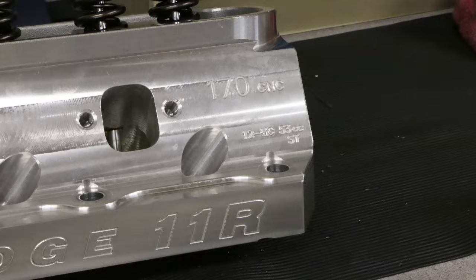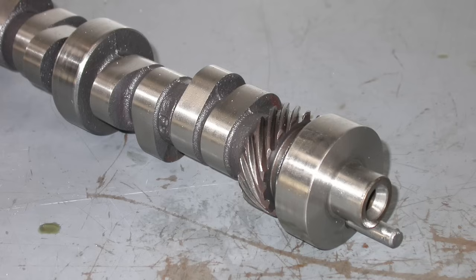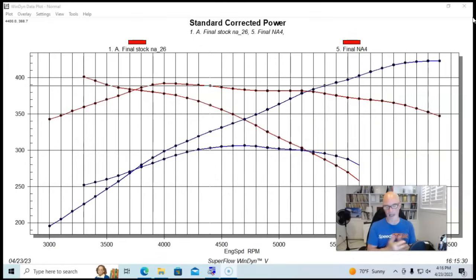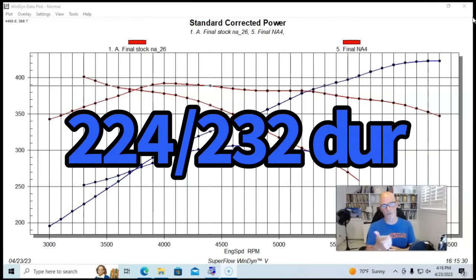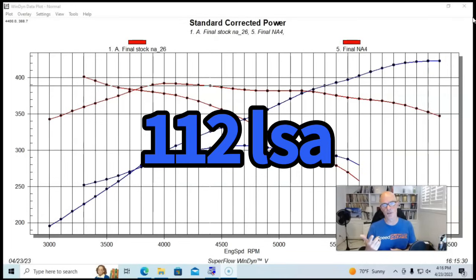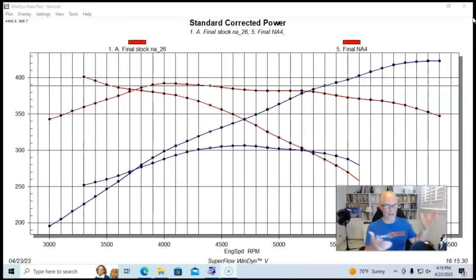It had the Trick Flow Stage 2 camshaft, which is almost identical specs compared to the Extreme Energy 274 cam—you know, mid-500s lift, 550-560 kind of thing, and 224-232 on a 112 or 113. I'll go ahead and put the specs up here.